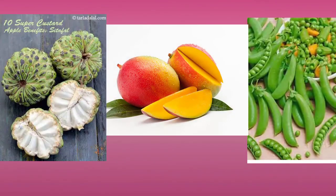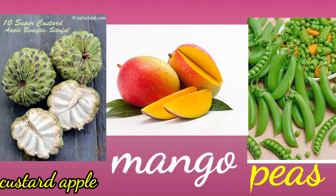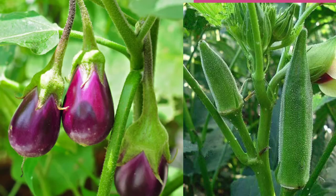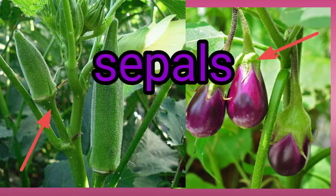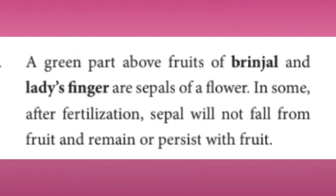The green parts above brinjal and lady's finger that we use as vegetables are actually fruits. The green parts above brinjal and lady's finger are the sepals of the flower. In some plants, after fertilization, the sepals do not fall from the fruit but remain and persist with the fruit.